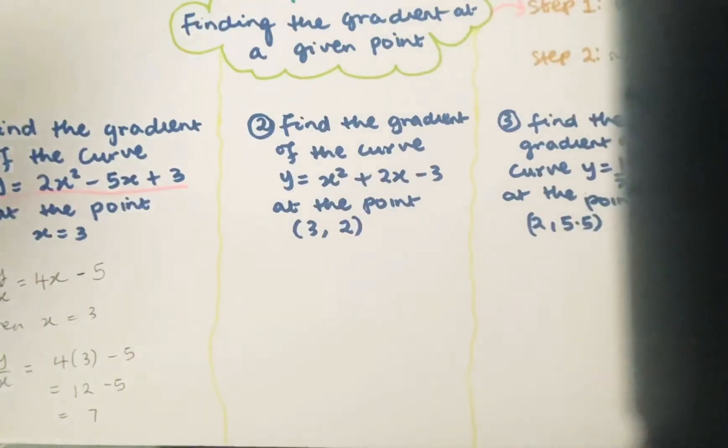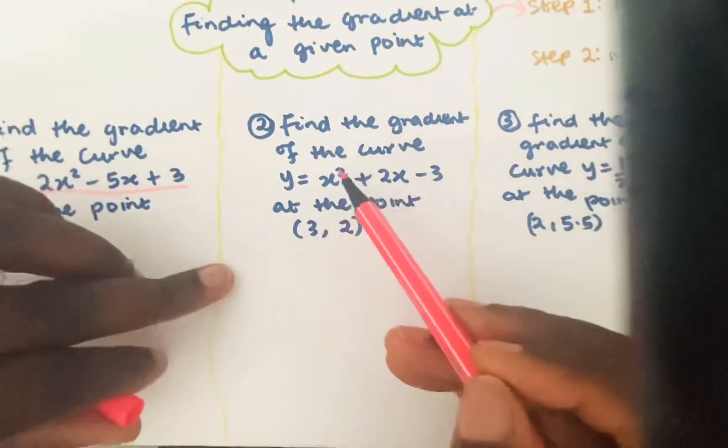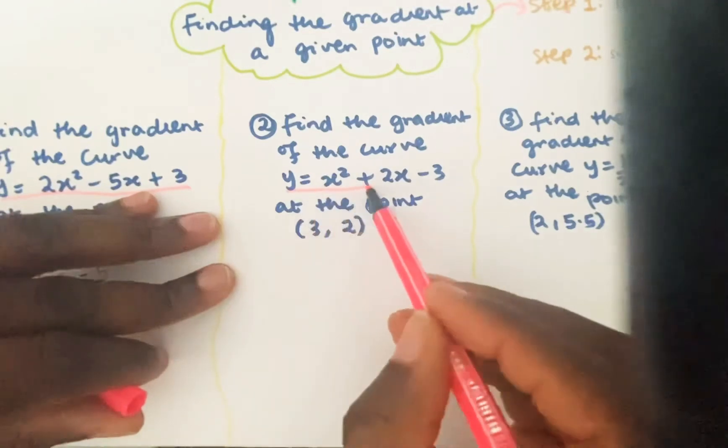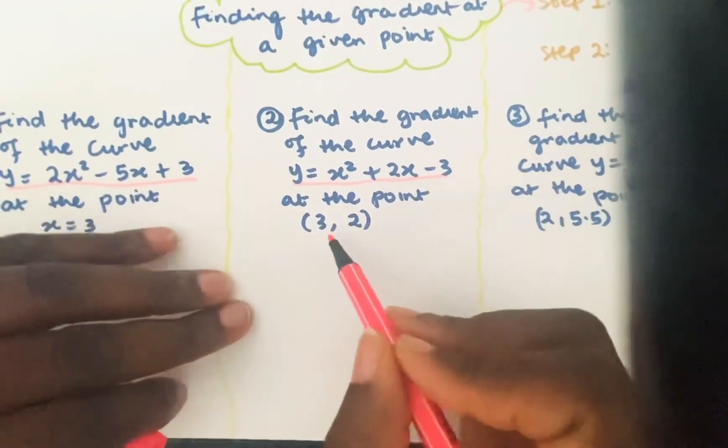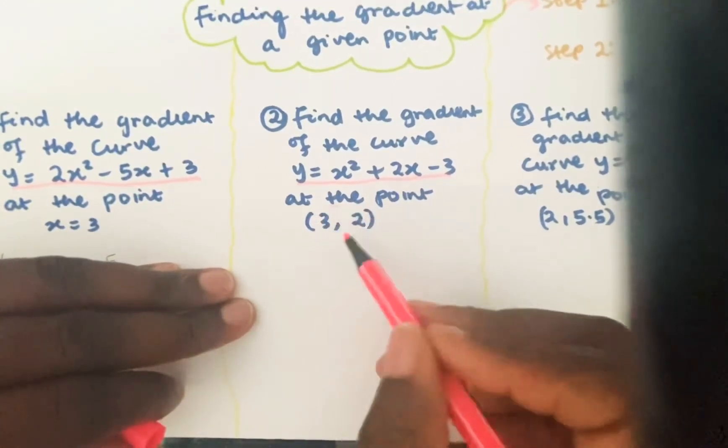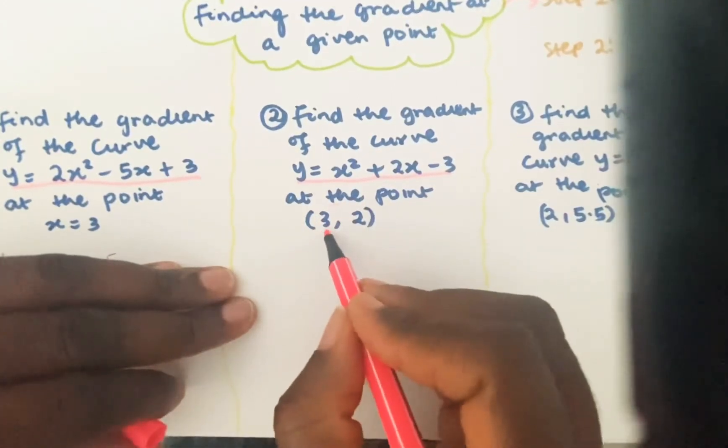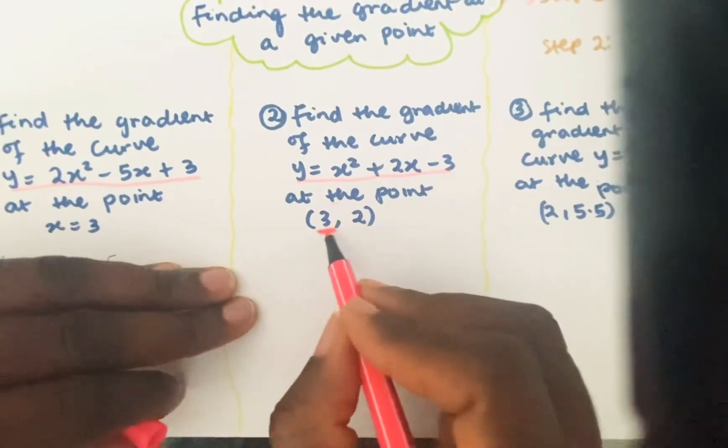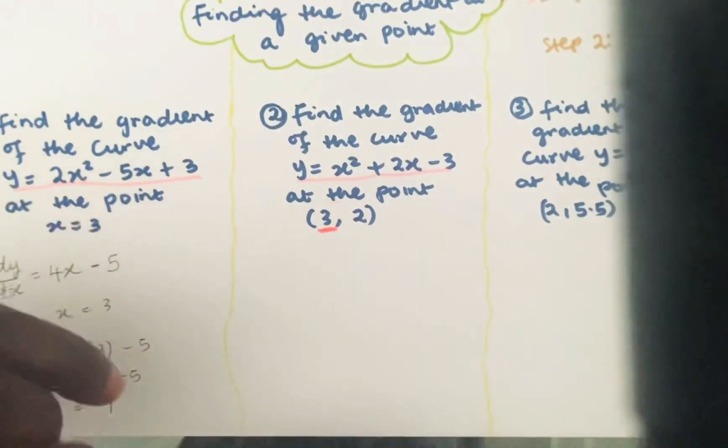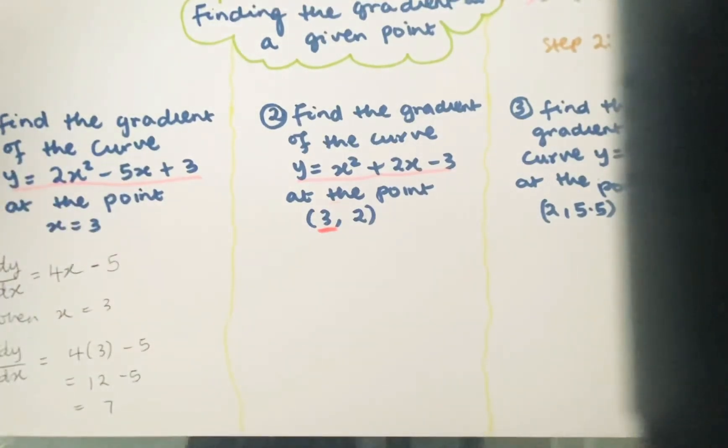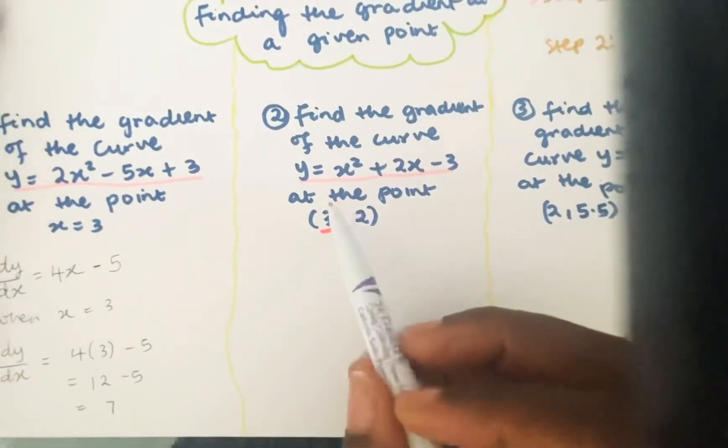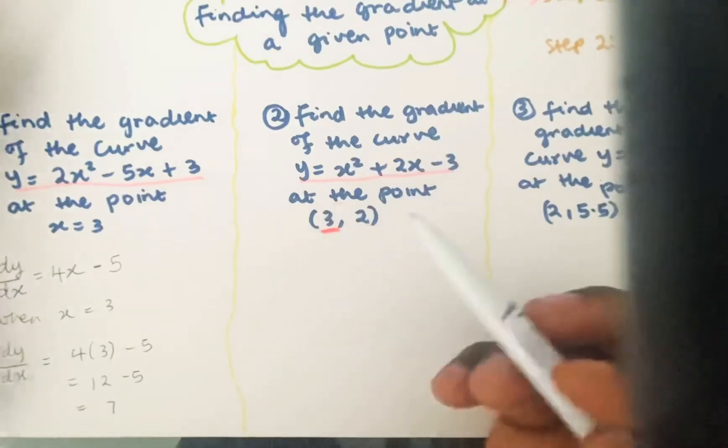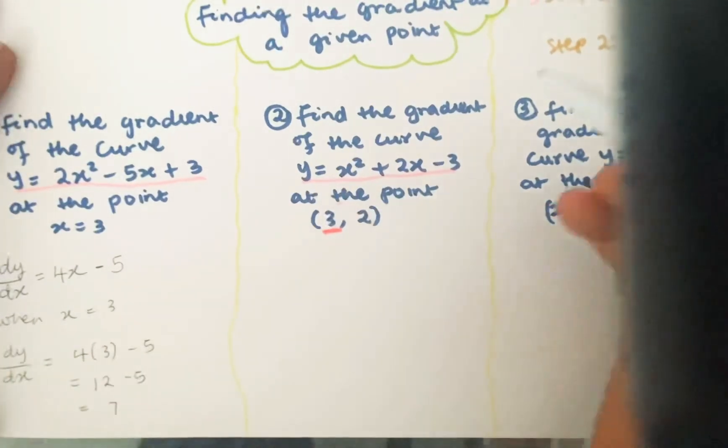The next example says, find the gradient of the curve y is equal to x squared plus 2x minus 3 at the point (3, 2). Sometimes it might give you coordinates in the question. But remember, you're only concerned about the x coordinate. You're only concerned about the x coordinate because that's the point that you want to find what the gradient is at. So the first step is to differentiate.